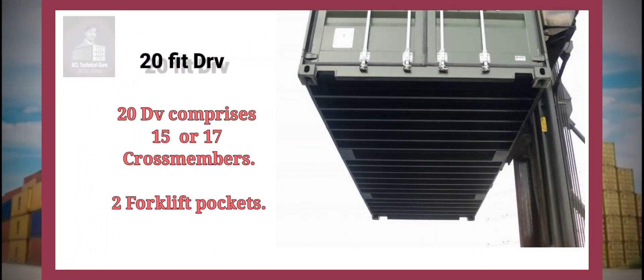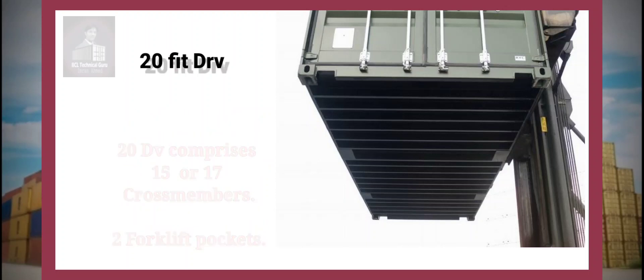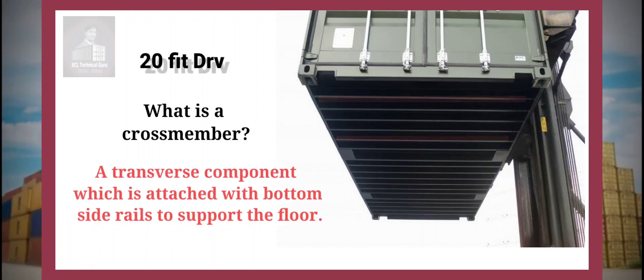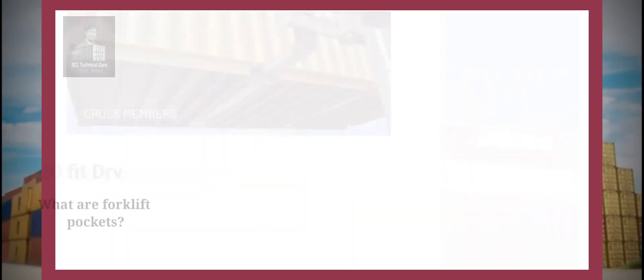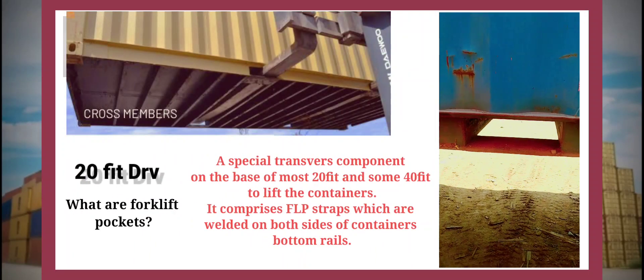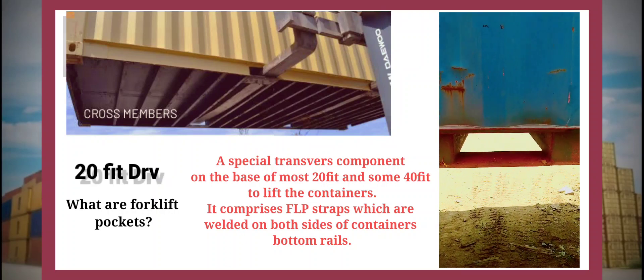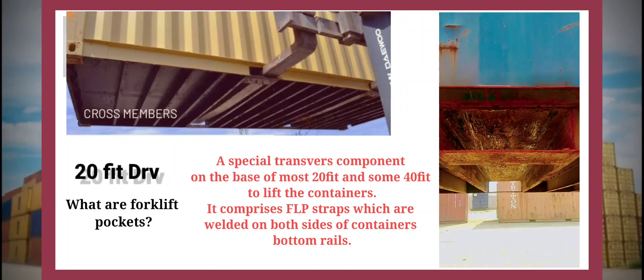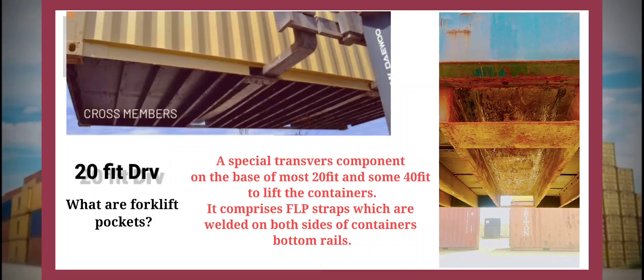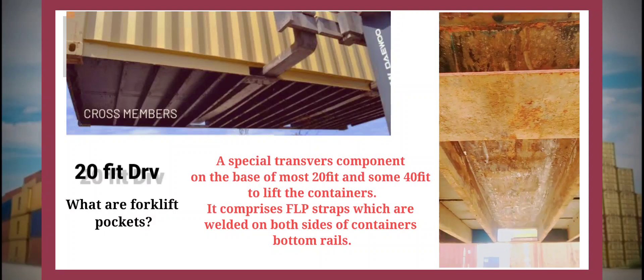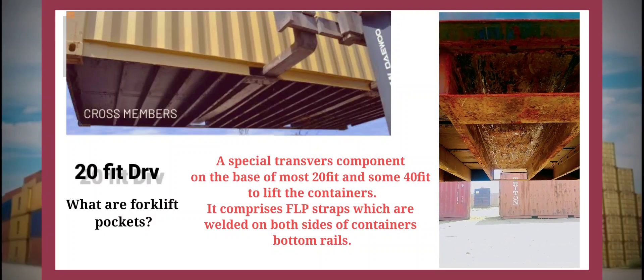A 20ft container comprises 15 or 17 cross members and 2 forklift pockets. Cross members are transverse components attached with bottom side rails to support the floor. Forklift pockets are special transverse components on the base of most 20ft and some 40ft containers used to lift them. They comprise FLP straps which are welded on both sides of the container's bottom rails.